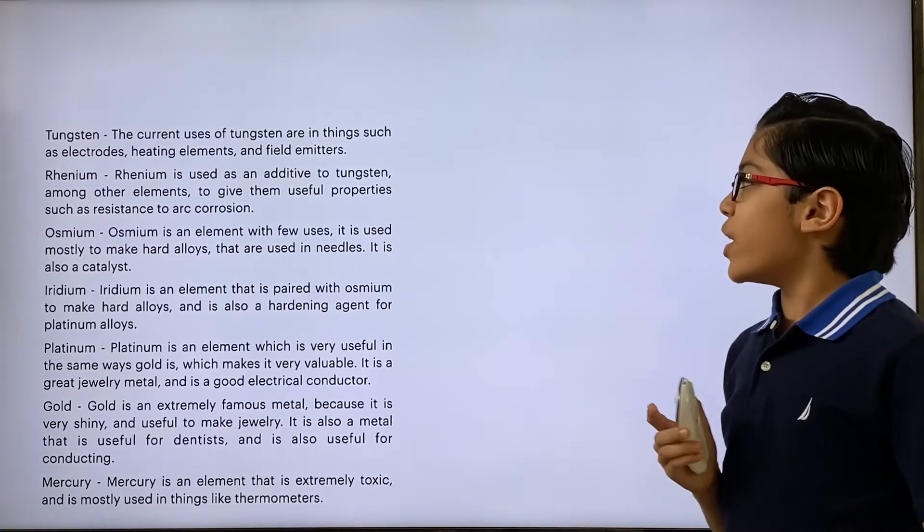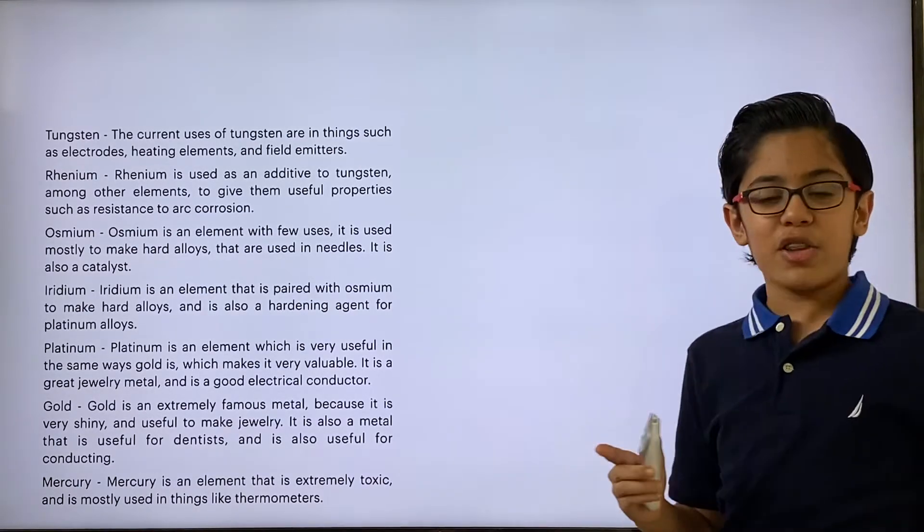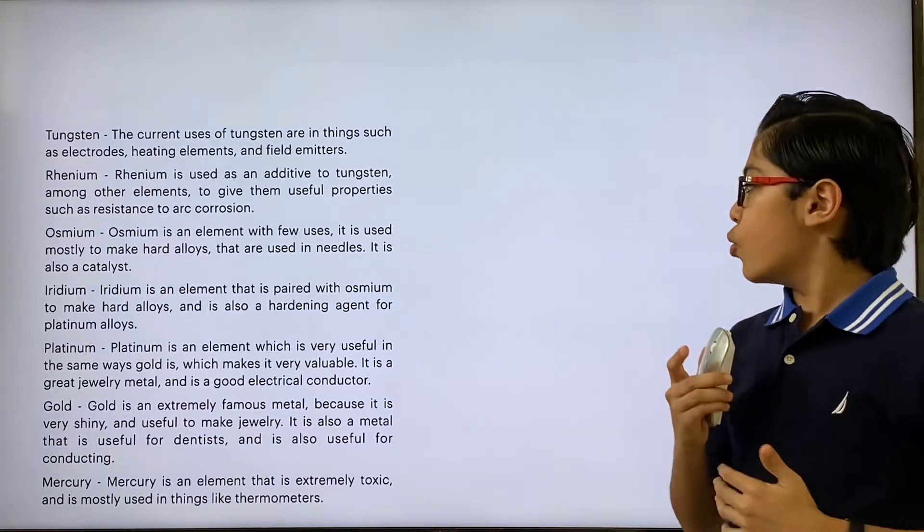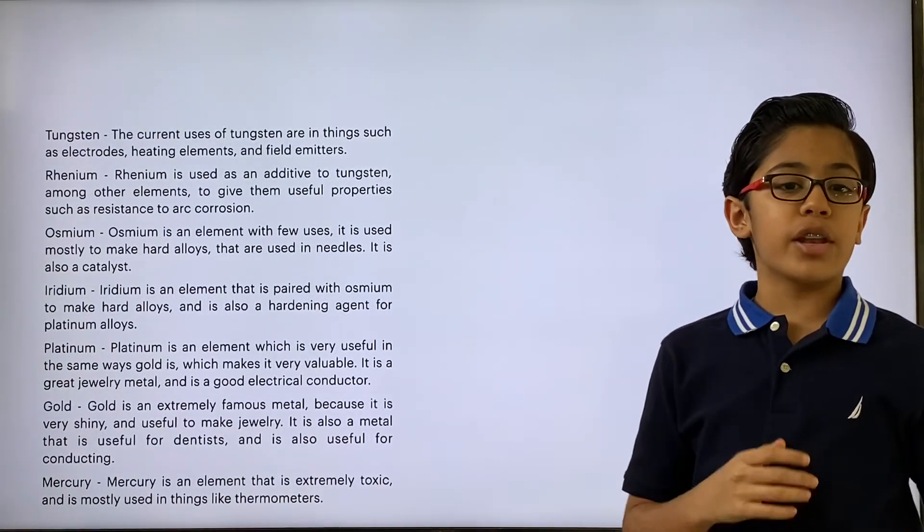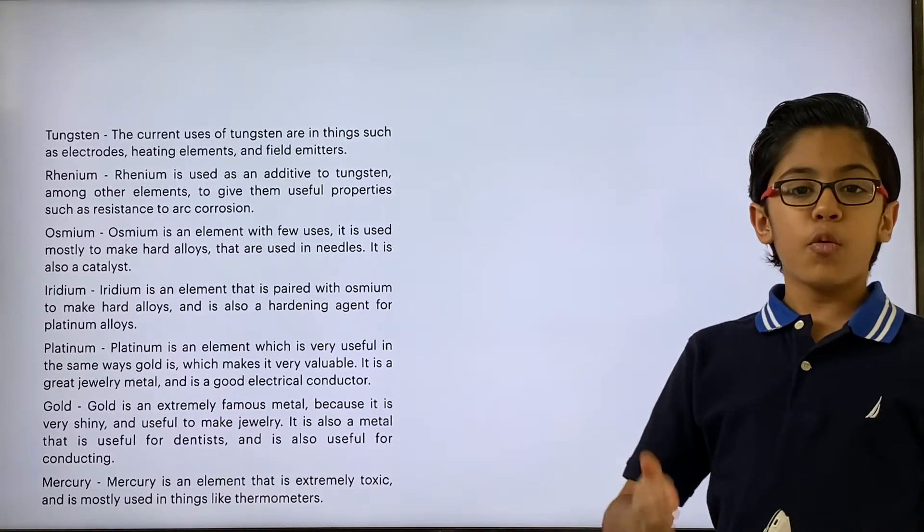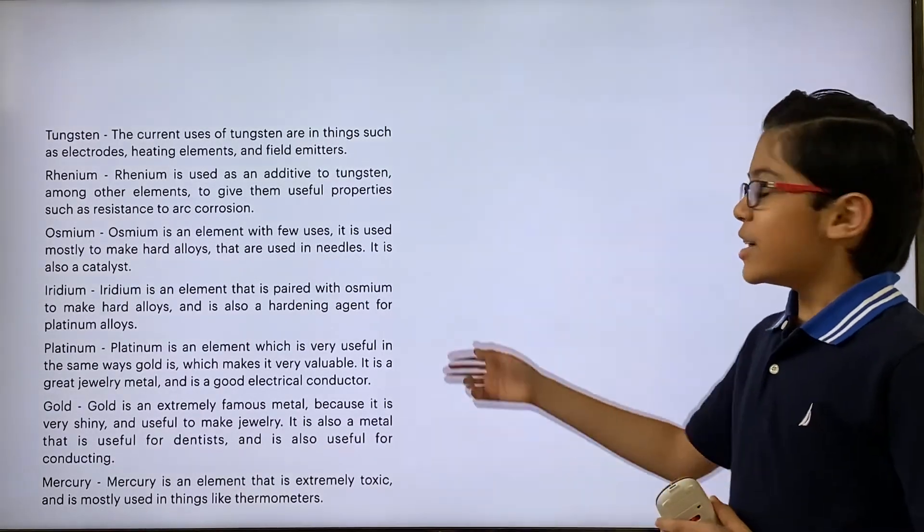Iridium is an element that's paired with osmium to make hard alloys, and it's also a hardening agent for platinum alloys. What that means is you put the two together, and you get something harder than platinum with the properties of platinum.